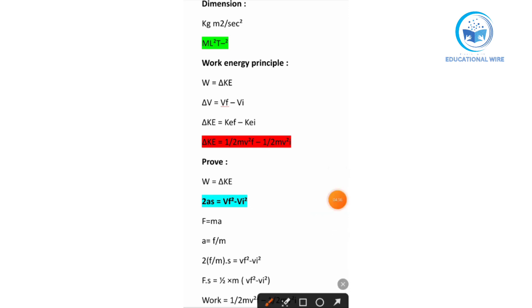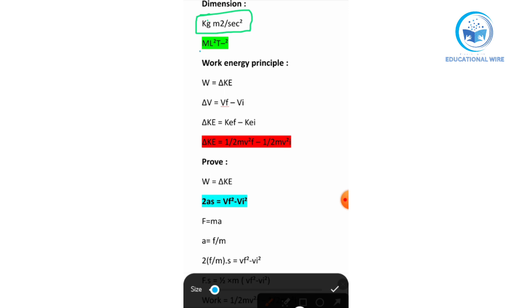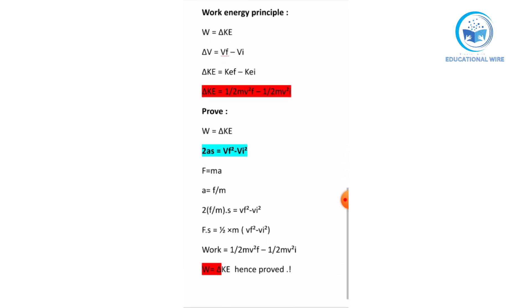Talking about the dimensions of kinetic energy — it is also easy to find. We already have the unit: kilogram meter squared per second squared. Kilogram is mass, so we write M. Meter is length, so we write L squared. Second is time, so we write T, and since it is in the denominator it becomes T to the power of minus 2. Therefore, the dimension of kinetic energy is ML²T⁻².